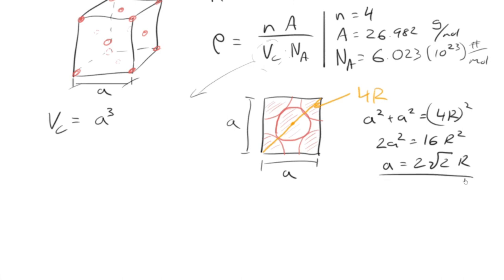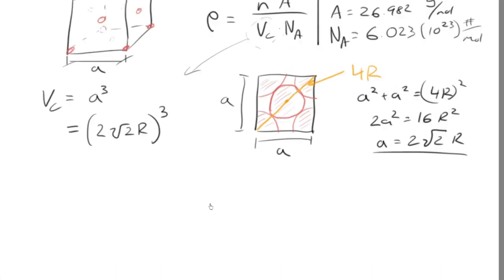Well, A is equal to 2 root 2R. So, that's our relationship between A and R. And now, we can write the volume in terms of A. And so, it's going to be 2 root 2R cubed. So, that's excellent. We're doing pretty well.